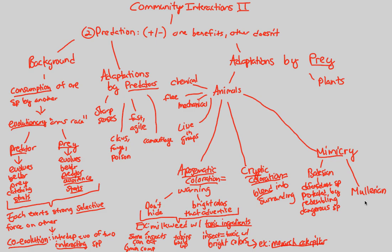Mullerian mimicry, on the other hand, is when many different species converge such that they all actually resemble each other — and all are actually dangerous. This is a team effort by prey to tell all predators that they all are dangerous, that they all don't taste good, that they all have aposematic coloration. That cumulative Mullerian mimicry effort tells predators: avoid me because I do not taste good. So we have two different types of mimicry seen in the animal world.